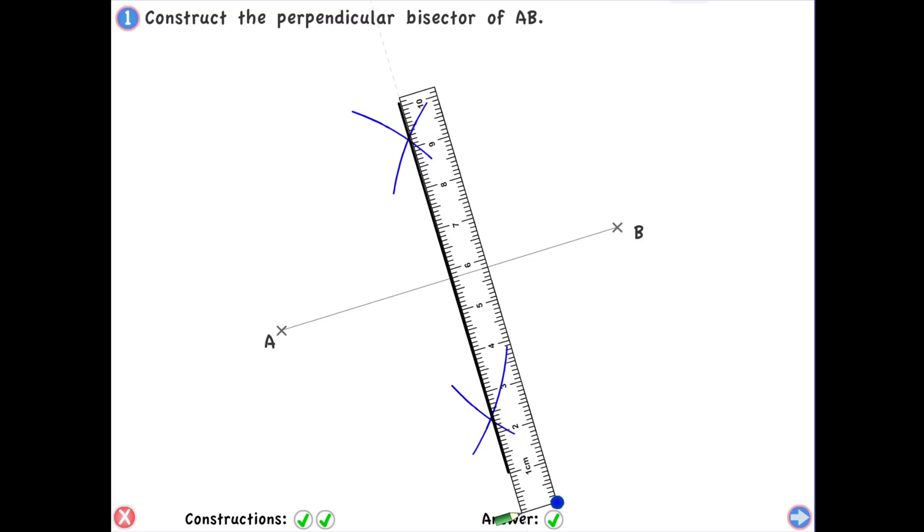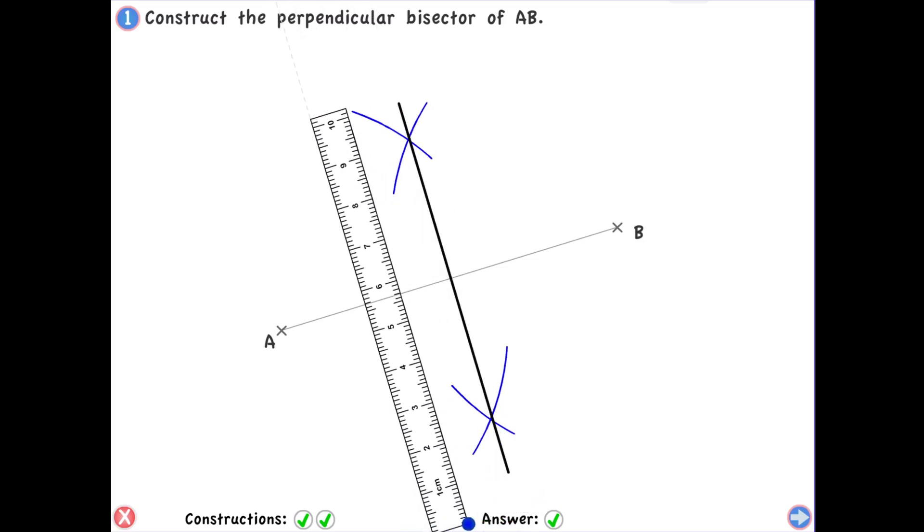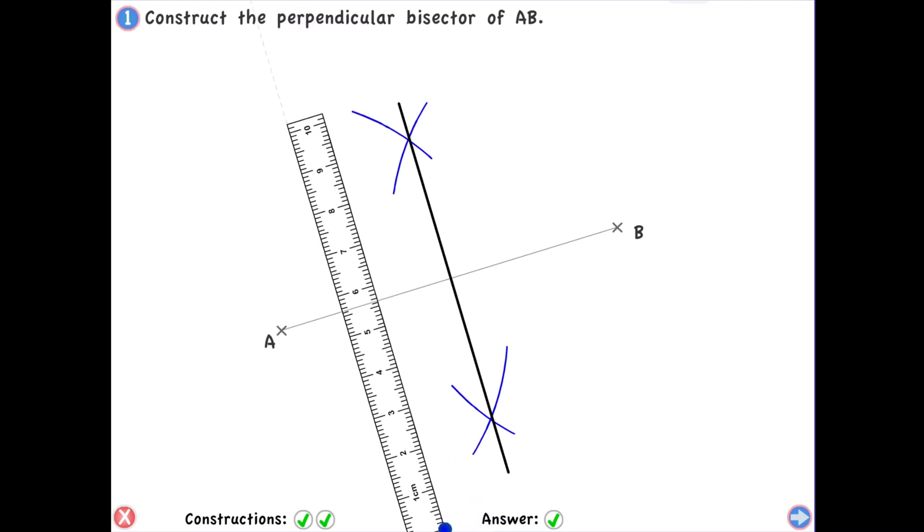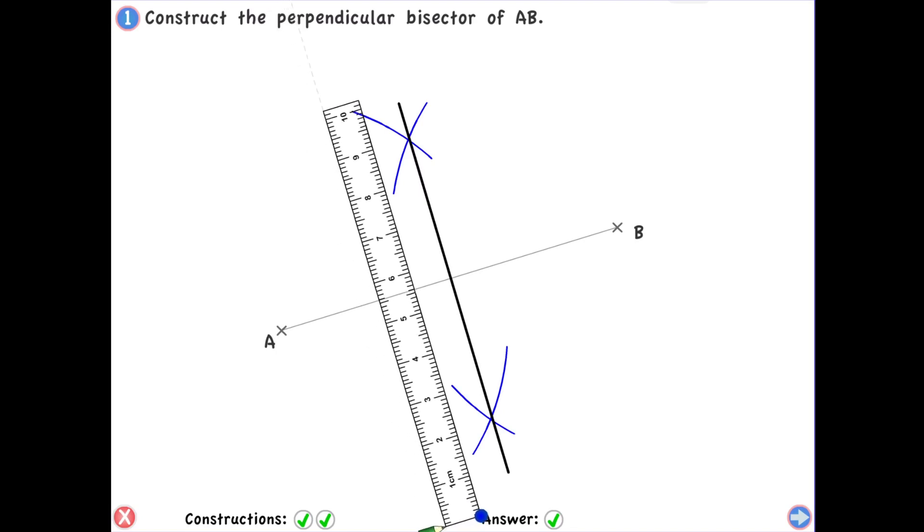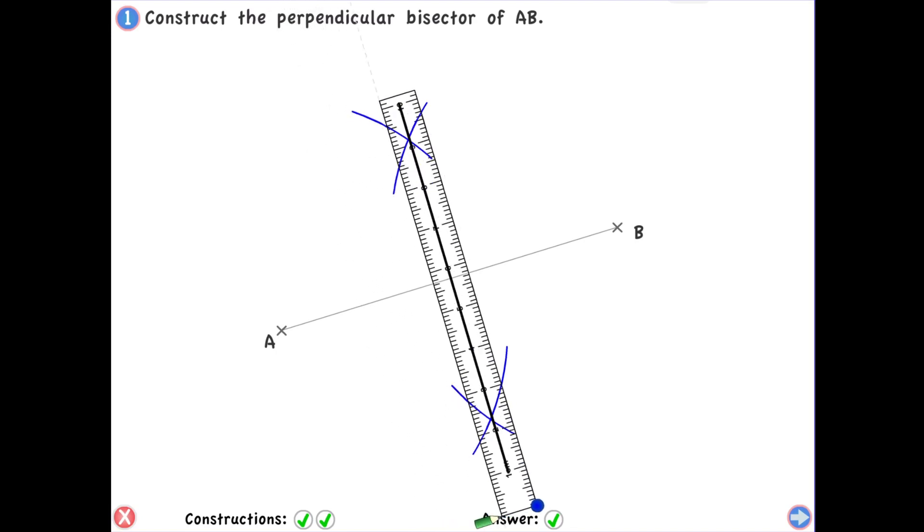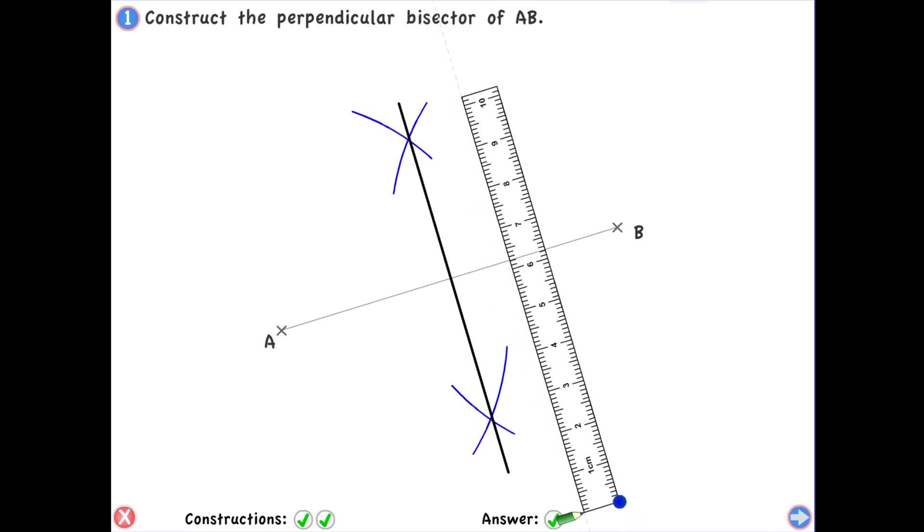If you want the region that is closer to A, that region is going to be on the left side of the perpendicular bisector. All the points lying in this region will be closer to A than to B. If you want the region that is closer to B, that is going to be this region, the one on the right side, and all the points lying in this region are closer to B as compared to A.